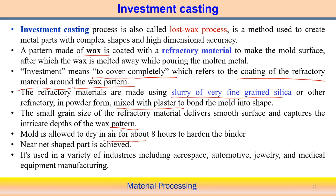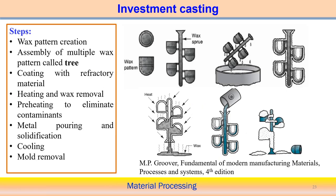Once the coating is placed on the wax pattern, it is allowed to dry for around eight hours to harden the binder — allowing curing so the coating becomes harder. This process can produce near-net-shape structures, meaning very good surface finish and dimensional accuracy. It is commonly used in the aerospace industry, automobile industry, jewelry, and medical equipment manufacturing.